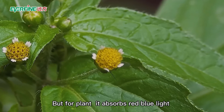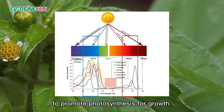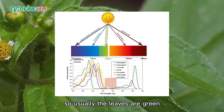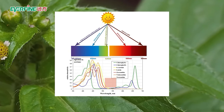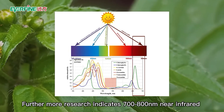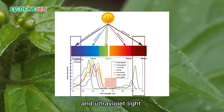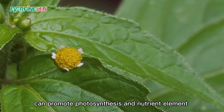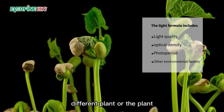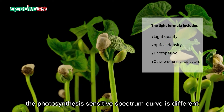For plants, red and blue light is absorbed to promote photosynthesis for growth, while most green light is reflected — which is why leaves appear green. Research also indicates that 700 to 800 nanometer near-infrared and ultraviolet light can promote photosynthesis and nutrient uptake. Different plants, or the same plant at different growth stages, have different photosynthesis-sensitive spectrum curves.